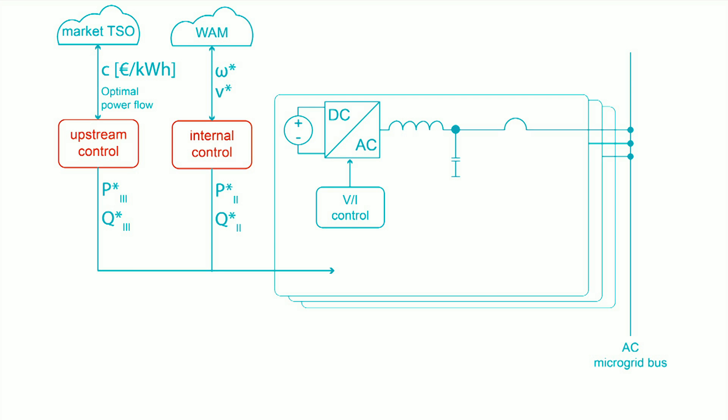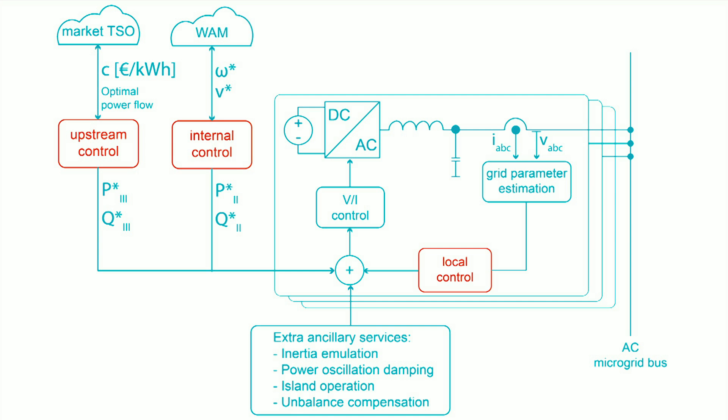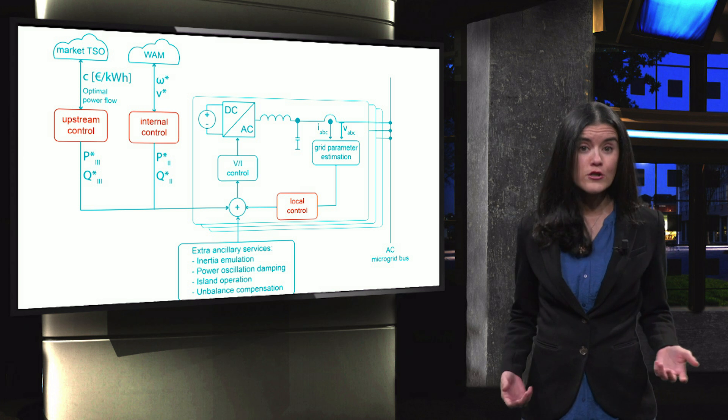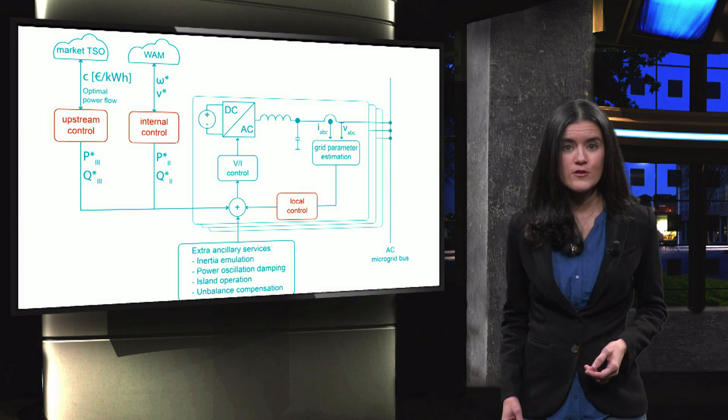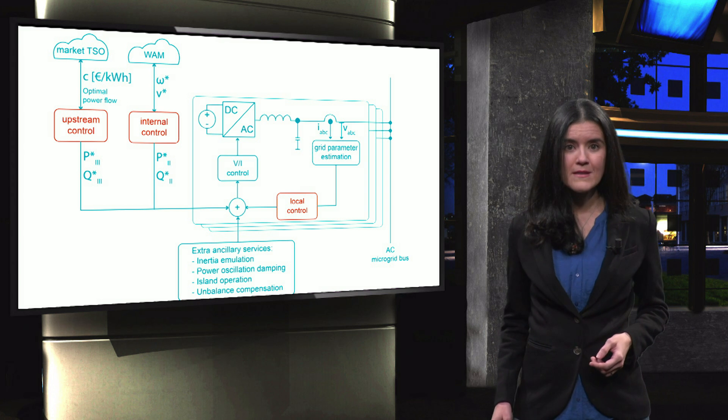At the lowest level, local control is implemented internally in a distributed generator in a decentralized fashion. Local control is the main responsible for controlling active power and reactive power in microgrids. The value of the three phase currents and voltages are retrieved from the grid and sent to the controller. A distributed generation unit might provide extra ancillary services to the microgrid. Inertia emulation is one of the typical ancillary services, as well as power oscillation damping, support violent operation and power quality issues.